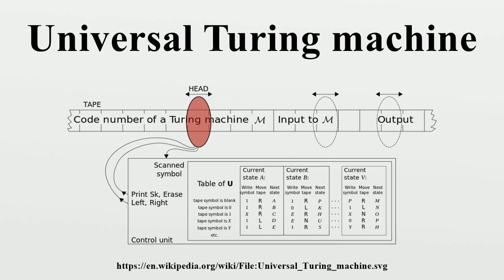An abstract version of the universal Turing machine is the universal function, a computable function which can be used to calculate any other computable function. The UTM theorem proves the existence of such a function.